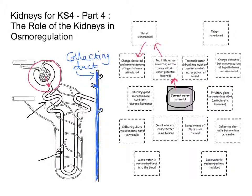The word 'osmo' is really referring to water, so these are receptors detecting water levels in the blood. The hypothalamus is the part of the brain involved in homeostasis, or the maintenance of a constant internal environment. We're stimulating the hypothalamus because we want to bring about a response. When we have too little water and the osmoreceptors are activated, we get the release of a hormone — ADH, or antidiuretic hormone — secreted by the pituitary gland.